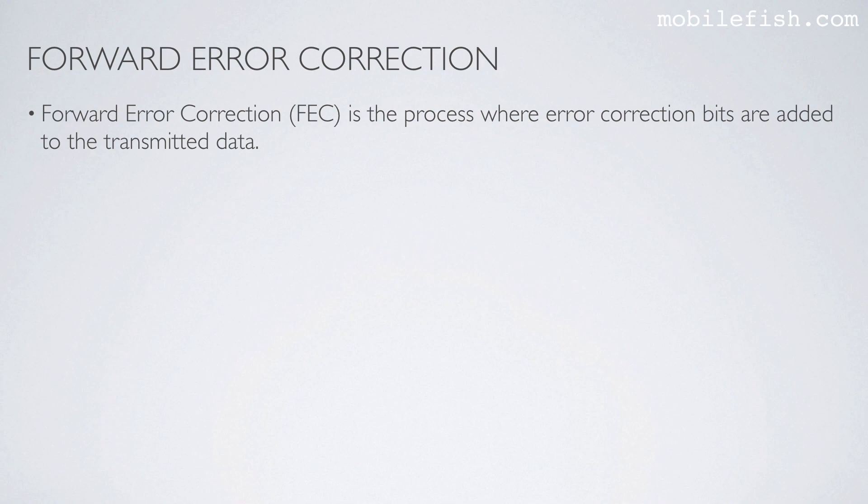Forward error correction is the process where error correction bits are added to the transmitted data. These redundant bits help to restore the data when the data gets corrupted by interference.